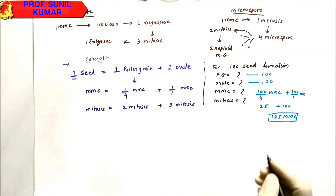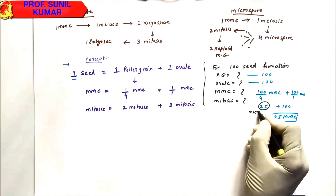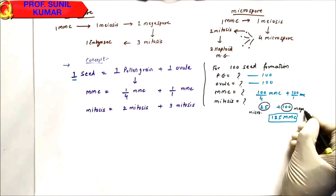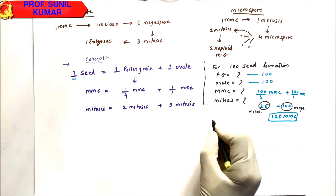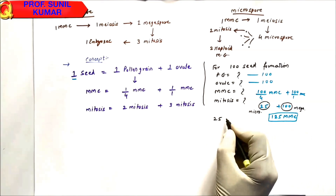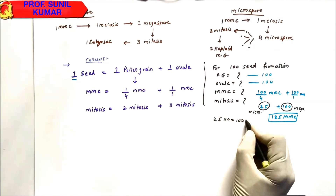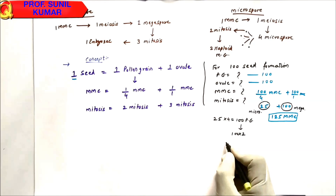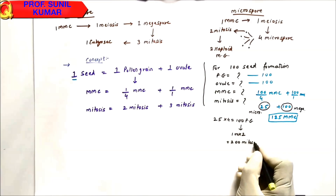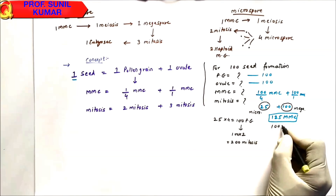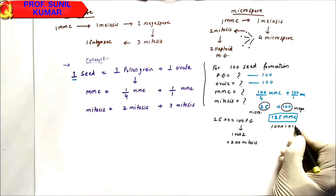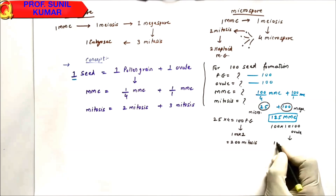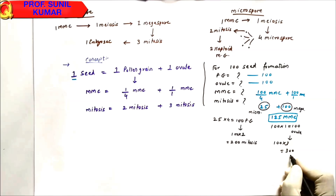Of the 125 MMCs, 25 are micro (male) MMCs and 100 are mega (female) MMCs. For mitosis: 25 MMCs give 25×4 = 100 pollen grains, and 100 pollen grains × 2 mitoses = 200 mitoses for male. For female: 100 ovules × 3 mitoses = 300 mitoses for female.